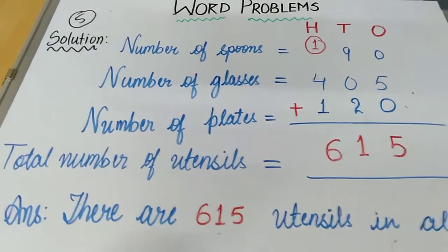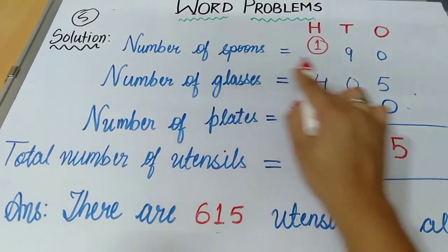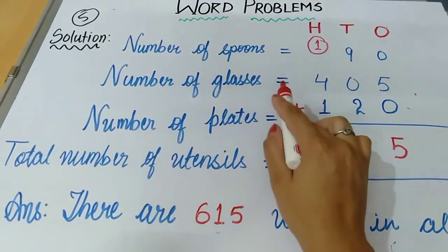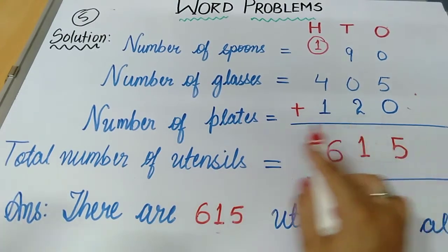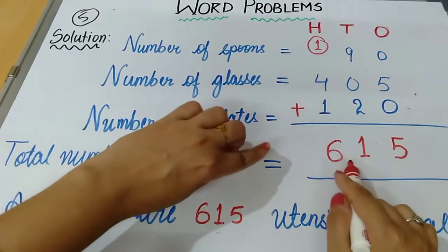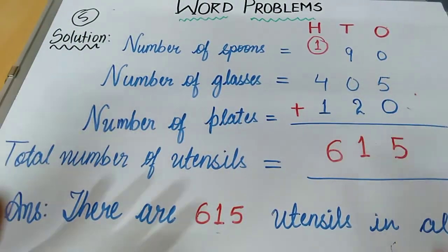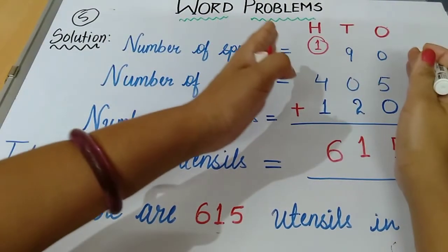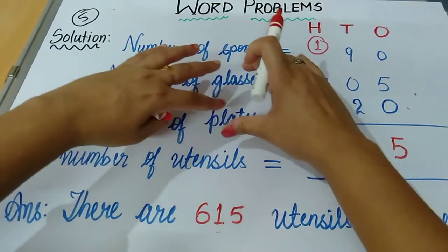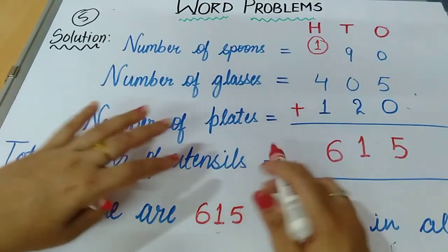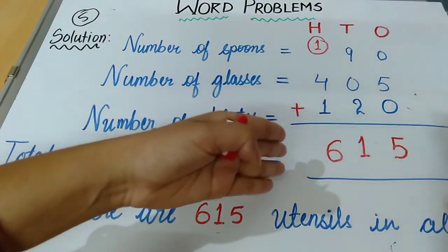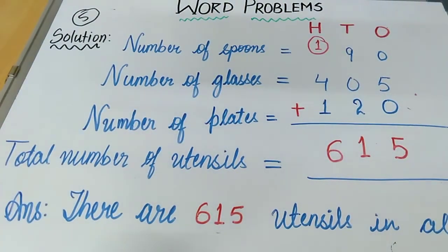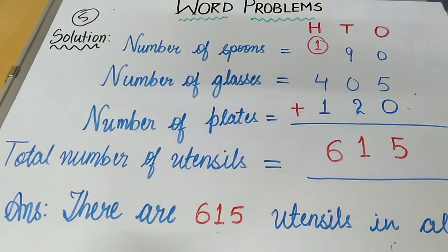So there are 615 utensils in all. Write it properly: number of spoons, number of glasses, number of plates — all aligned one below the other, then the total number of utensils. If there is no space in your copy, write the total number of utensils and add there. In this way you can solve word problems. I hope that you have understood how to solve them.